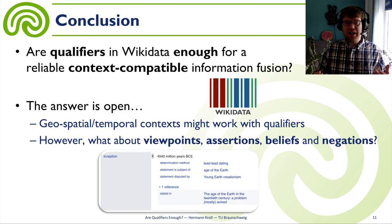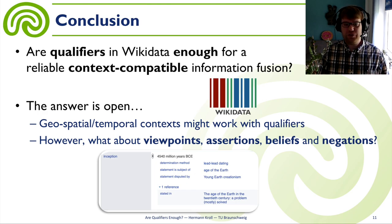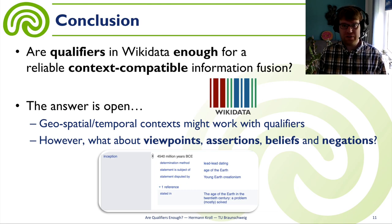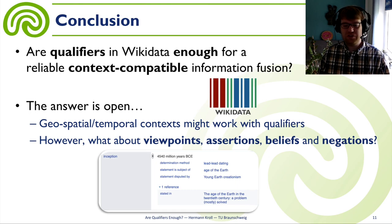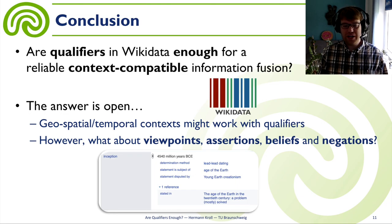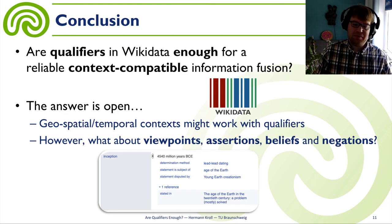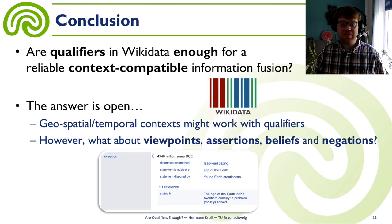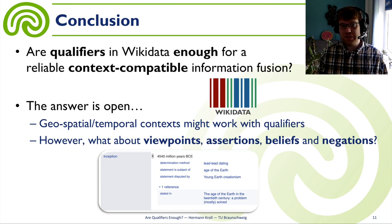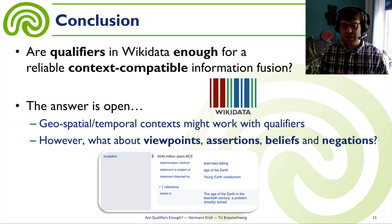I would love to discuss the following question with you: are qualifiers in Wikidata enough for a reliable context-compatible information fusion? I don't know the answer. Maybe if we think about geospatial or temporal context, we could build rules — few statements, same time — and everything is fine. But if we think about the different plethora of combinations, it becomes impossible. Another point: Wikidata tries to collect as much knowledge as possible. If we have viewpoints, assertions, beliefs, and negations — some might say they don't belong to Wikidata — but if we think about recent conflicts or the inception of the Earth, we see qualifiers like 'subject of some theory' and 'disputed by some other theory.' How should we handle that? I don't know, but I think it's important to talk about these problems in Wikidata.